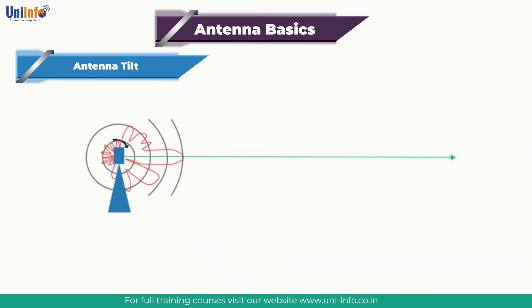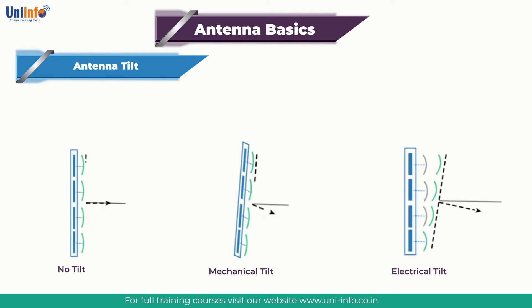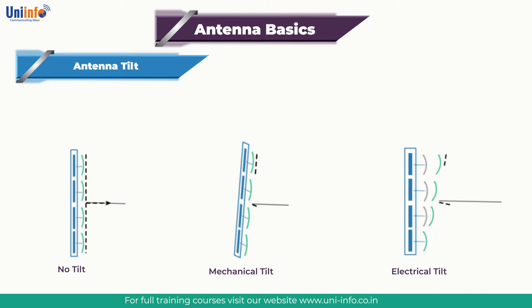Let us understand what a tilt is. The tilt represents the inclination or angle of the antenna to its axis. When we apply a tilt, we change the antenna radiation diagram. For a standard antenna without tilt, the diagram is formed as shown in the figure on screen. There are two possible types of tilt, which can be applied together: the electrical tilt and the mechanical tilt.